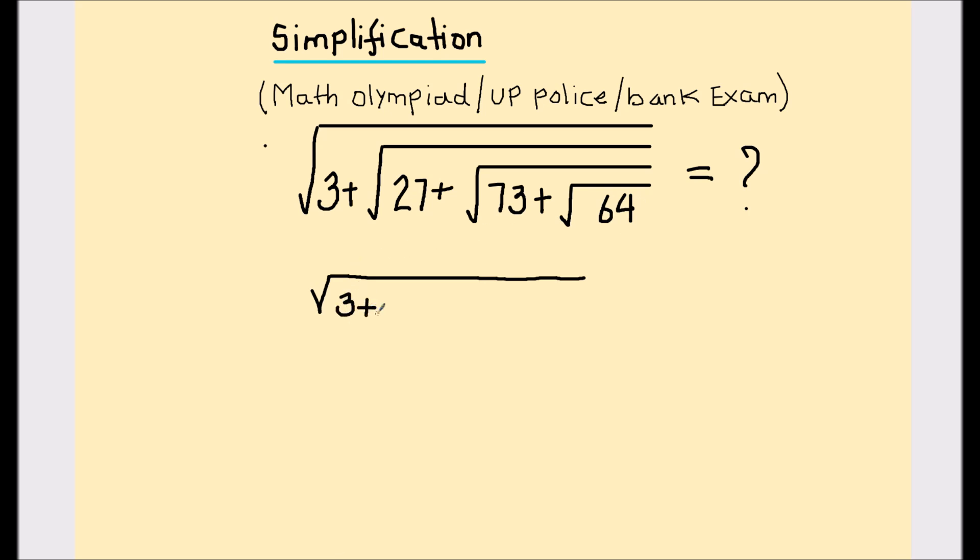This is going to be √(3+√(27+√(73+8))). The square root of 64 is 8, because 8 times 8 is 64, so this is going to be 8.